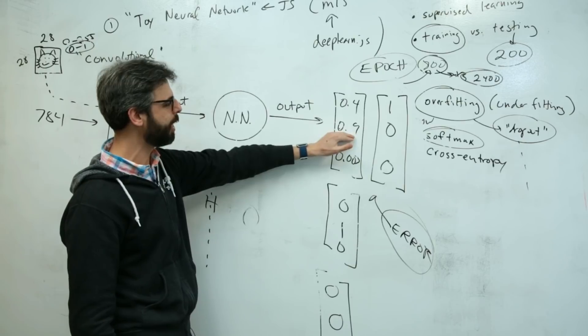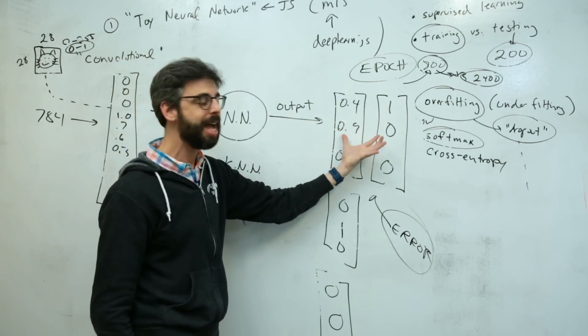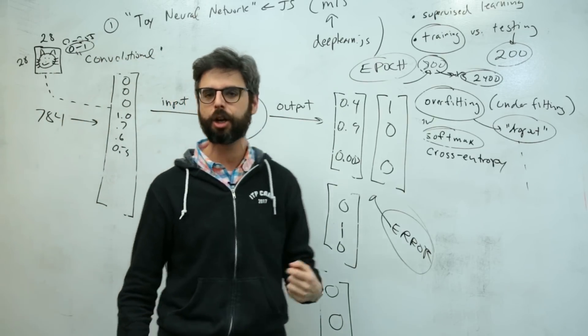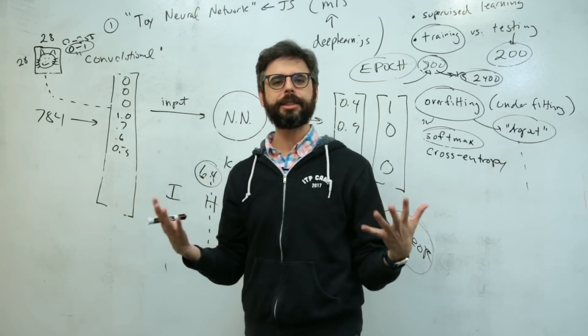You calculate what it's supposed to be versus what it guessed, and feed that error back through the neural network. This error is sent backwards through the network through a process known as backpropagation, where all of the weights are tuned and changed.